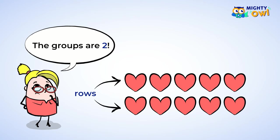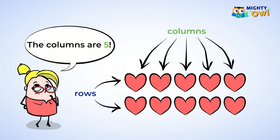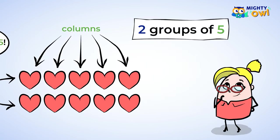Now you can count the number of columns. This is how many objects are in each group. There are five columns. So this array has two groups of five. Two multiplied by five equals ten.